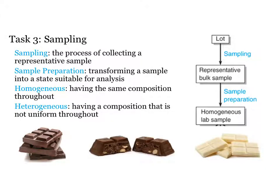We need to decide what will constitute a representative sample. If the amount of caffeine in milk chocolate has previously been determined, maybe we want to move on to dark chocolate or white chocolate. So of all the varieties of chocolate available — which we'd call our lot — we decide to choose a sample that is representative of dark chocolate. Note that this would exclude dark chocolate with almonds or nougat, which represent a higher degree of variability than if we choose to sample plain dark chocolate.